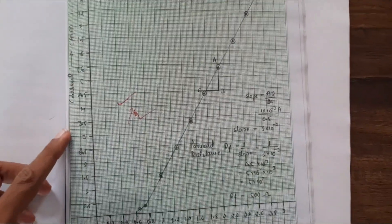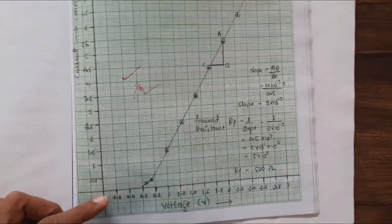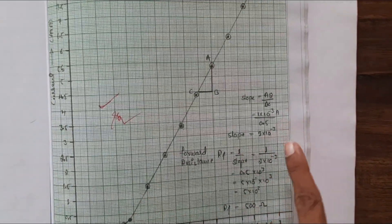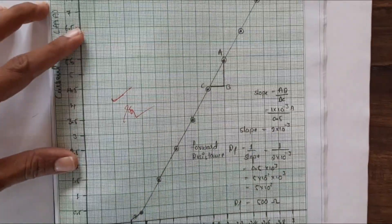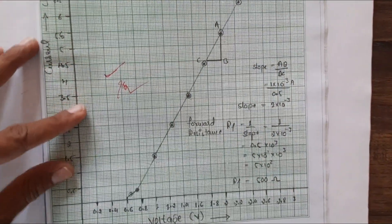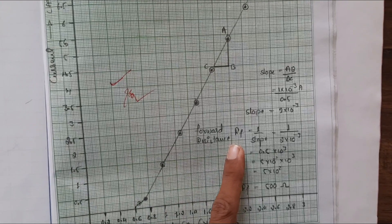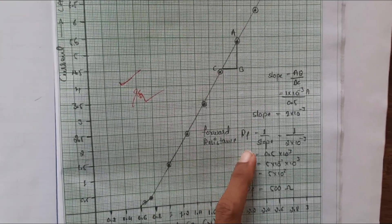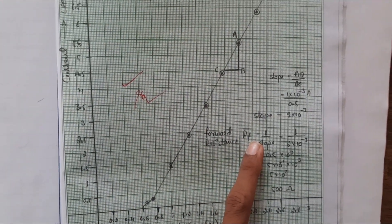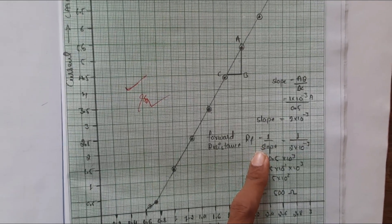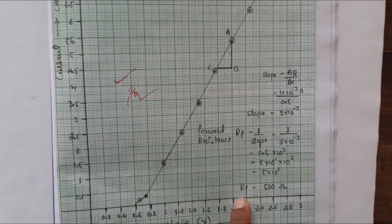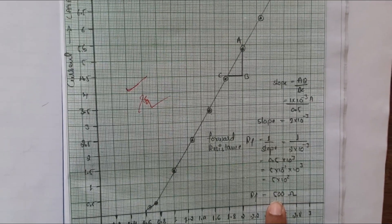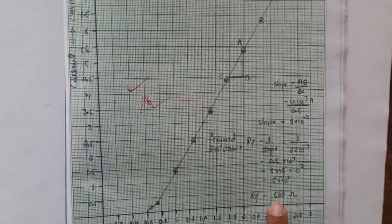Once you plot the graph of voltage versus current it is a straight line. Take the slope; if you calculate the slope you can find out the resistance. If you want to calculate the resistance, take 1 over the slope — 1 divided by slope. They got around 500 ohms resistance for the PN junction in forward bias.